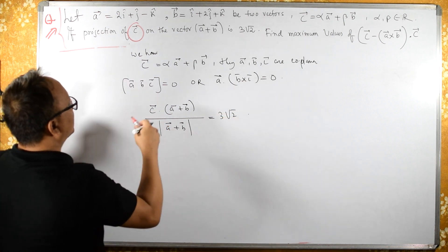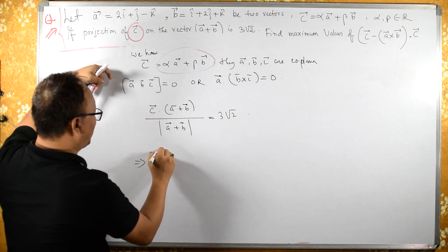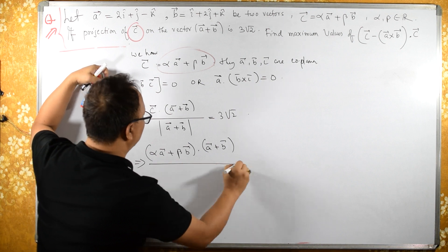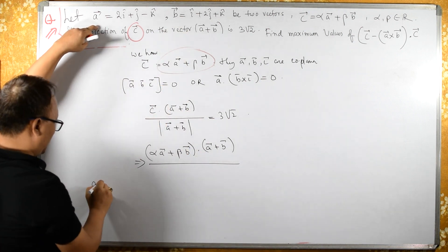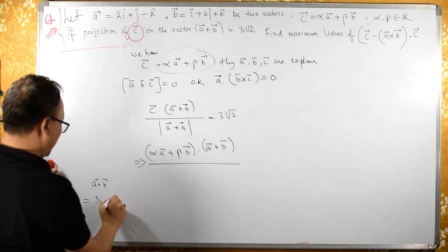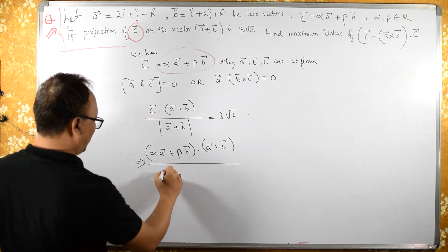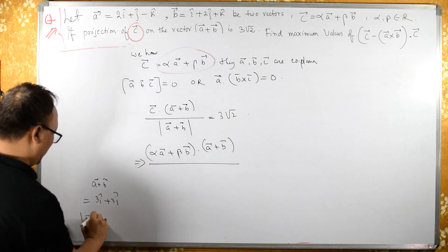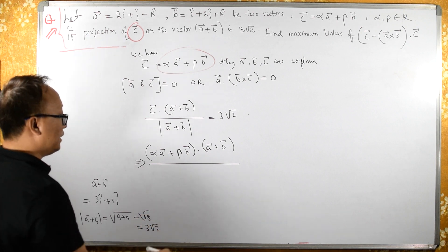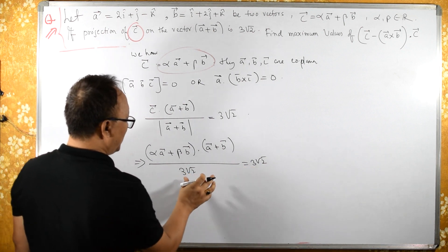Now c is alpha·a + beta·b, so substituting: (alpha·a + beta·b) dot (a + b), divided by |a + b|, equals 3√2. Now a + b vector equals (2+1)i + 3j, so the k-component becomes 0. Therefore |a + b| = √(9 + 9) = √18 = 3√2. So the right-hand side is also 3√2, giving us 3√2 × 3√2 = 18.